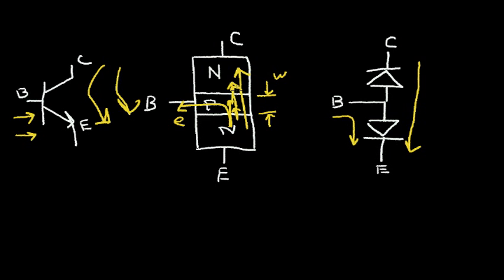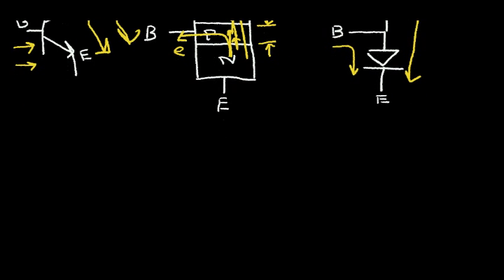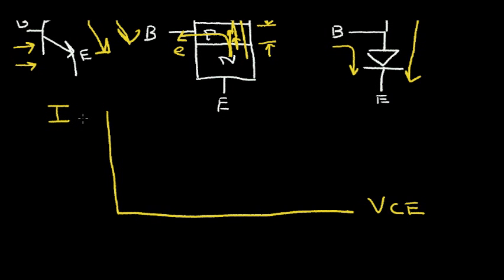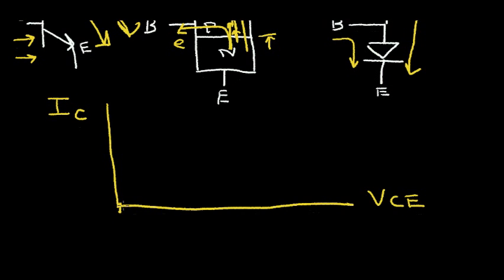So if I plot the current versus voltage characteristics for this transistor, this axis will be voltage collector to emitter. This axis will be current in the collector. Now if I plot a typical characteristic, let's say I put a little bit of base current in, and I plot this characteristic. I'll get zero here. I'll do something like this. There'll be a slight slope, and eventually the transistor will break down, and I'll get a huge current flowing.